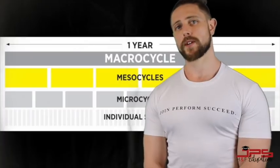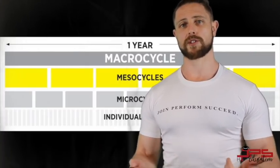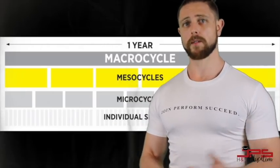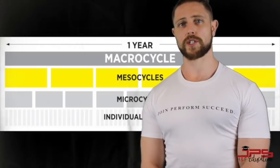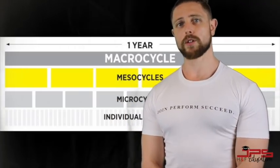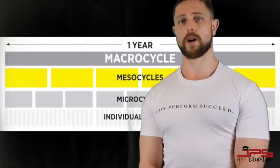Most importantly, periodization is goal-oriented — we are looking to achieve a certain goal and planning everything around our training can help us achieve that. The timeframes are: firstly the macro cycle, which is your big picture plan generally six to twelve months or longer; then the meso cycle, which is generally weeks and months; then the micro cycle, which is a weekly period; and then the individual workouts within that period.